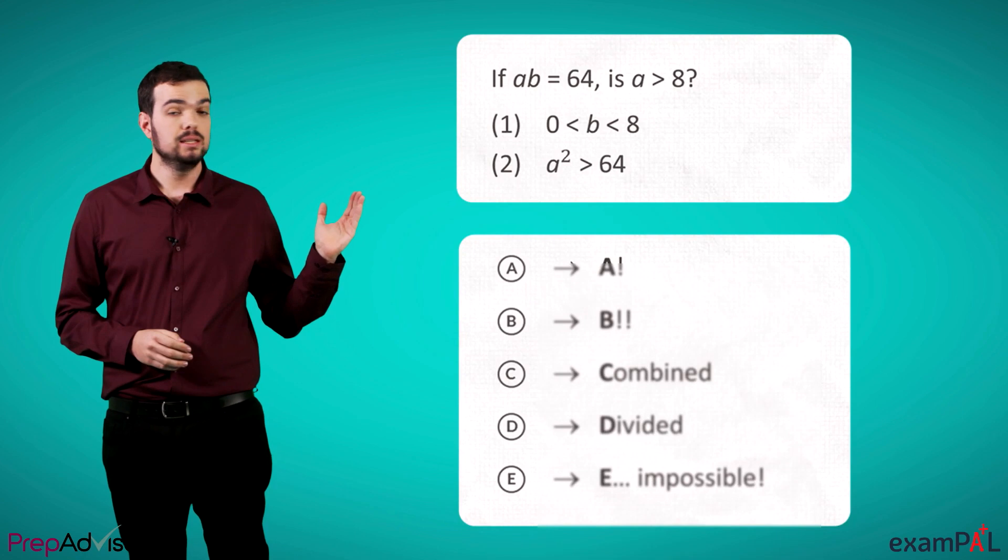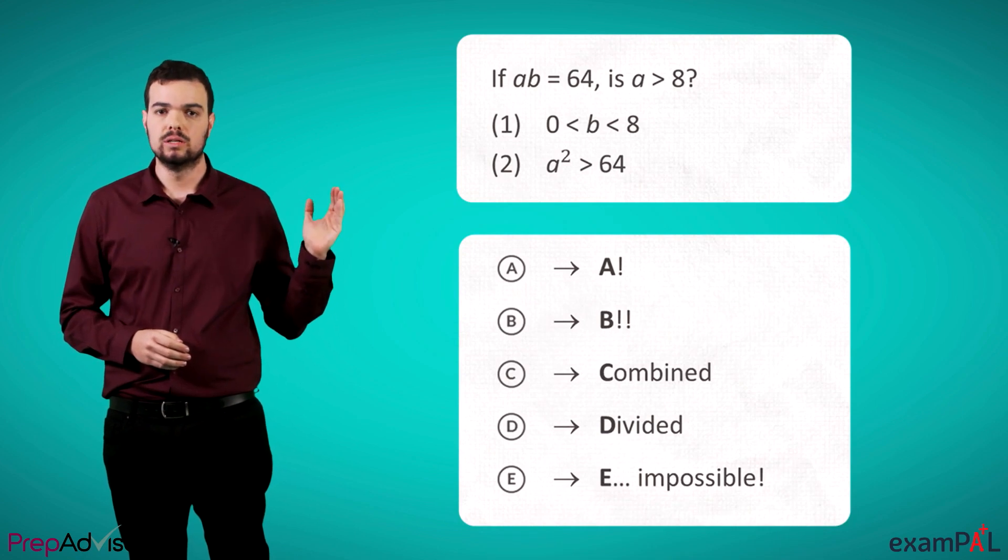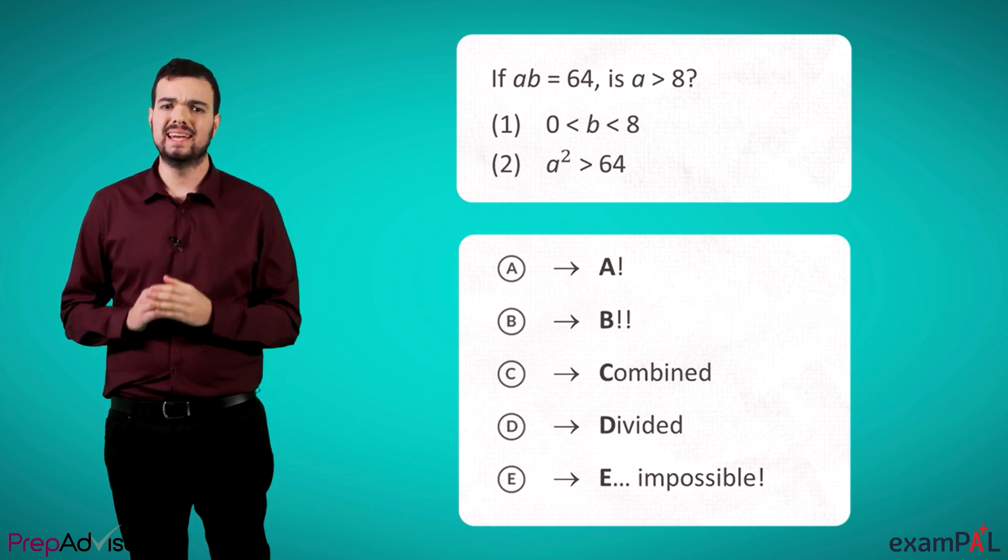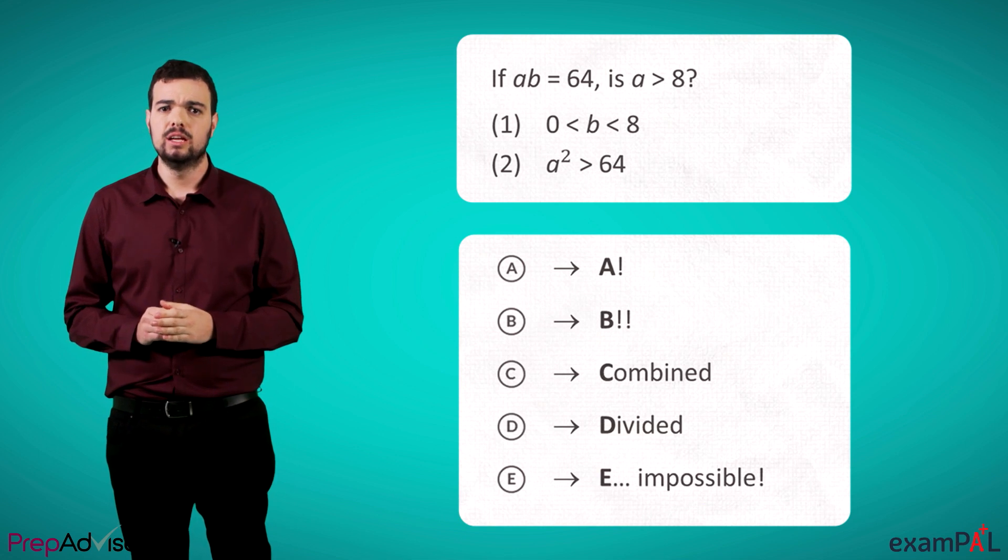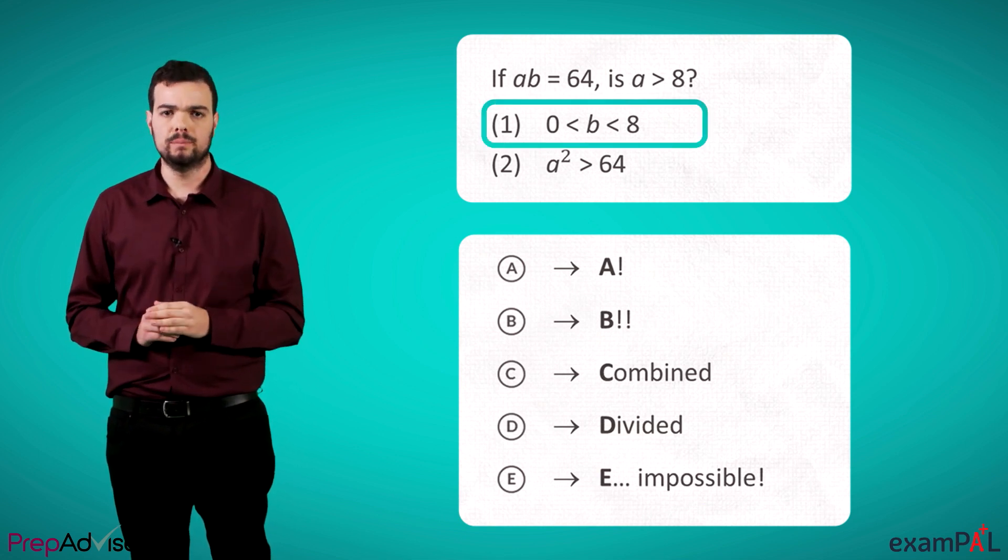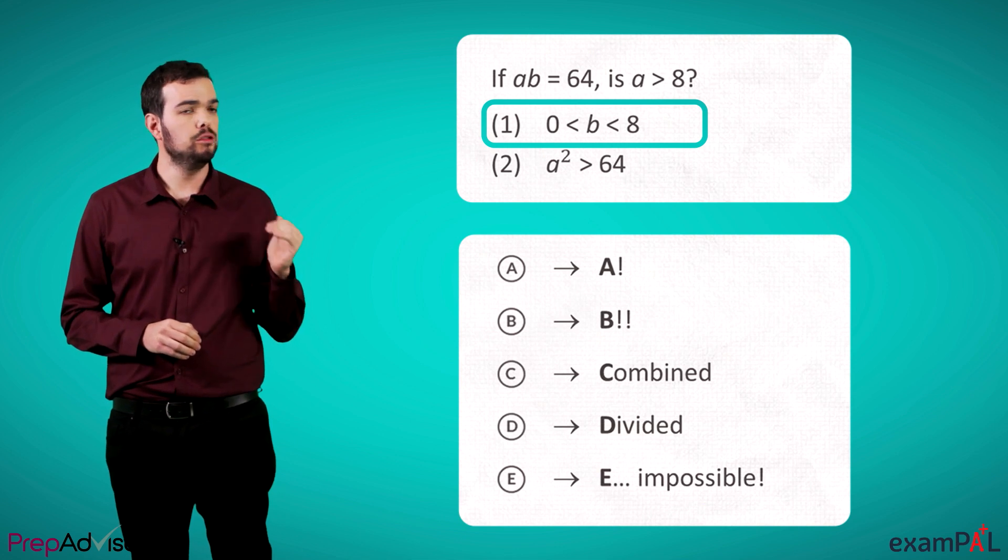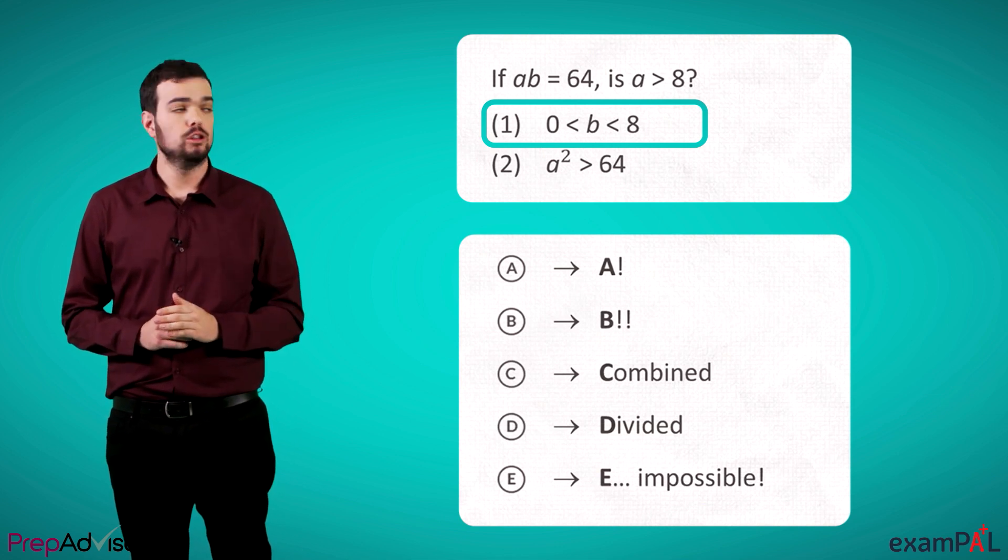Let's look at another example. If ab equals 64, is a larger than 8? Using the logical approach, we'll start by looking at statement 1. b is smaller than 8 and larger than 0.